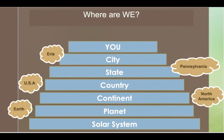Let's review where we are. We know that the very bottom, the biggest piece, is the solar system. The next piece is our planet, Earth. Then the continent, North America. The country, USA — the United States of America. Then our state, Pennsylvania. Our city of Erie. And the very top piece, the smallest piece of our diagram pyramid, is you — the most important part of the where are we pyramid.